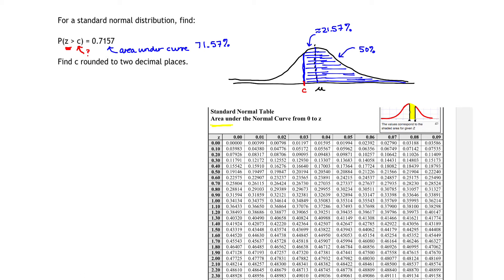And recall, these values here in the table correspond to the area under the curve in between the mean and Z. It's this shaded bar right here. I have a corresponding shaded bar up in my picture right here.